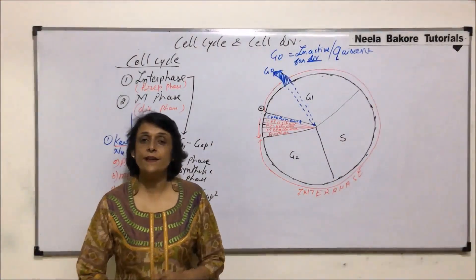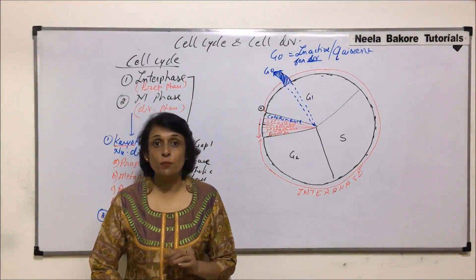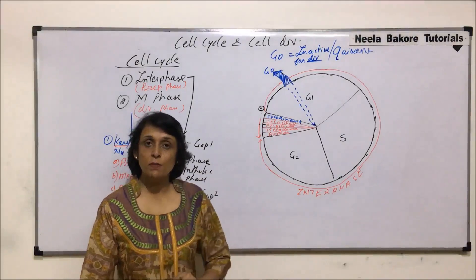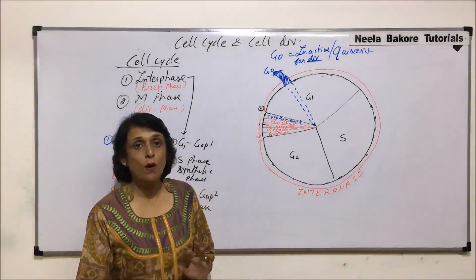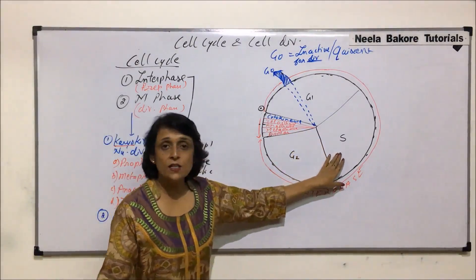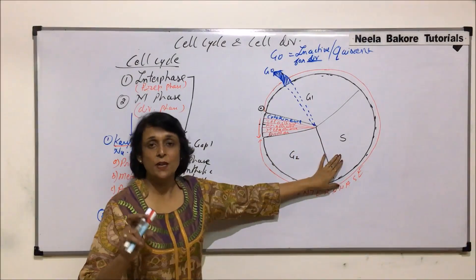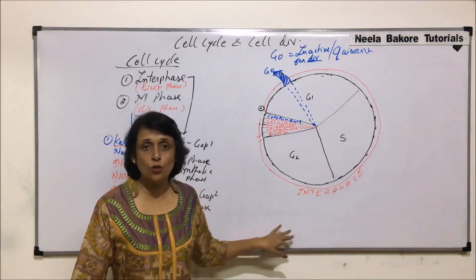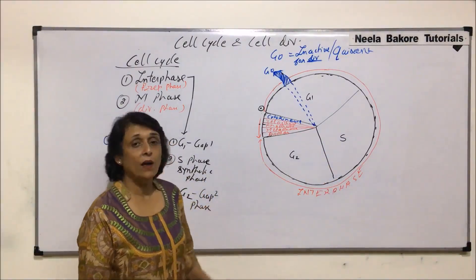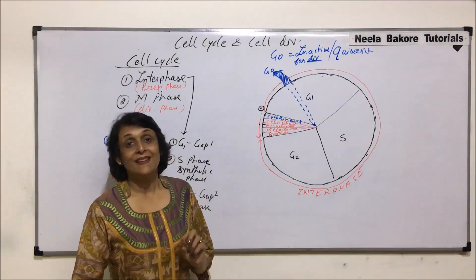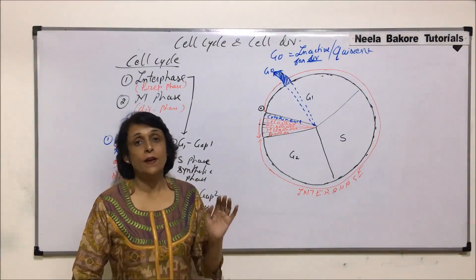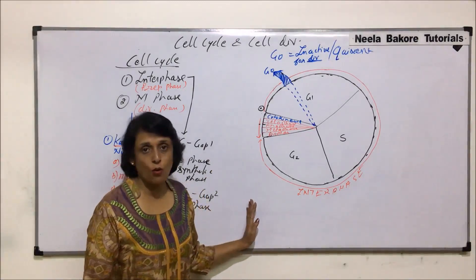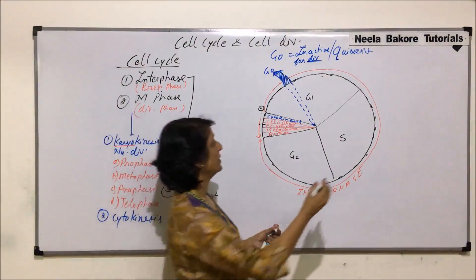In this segment, we will talk about the checkpoints. We have seen the complete cell cycle — what changes take place, the areas where changes occur for particular reasons, and how the C value and chromosome numbers change. Now, when the cell goes through the cycle, there are three places where it is checked whether the preparation is as per requirement. Those are known as checkpoints.